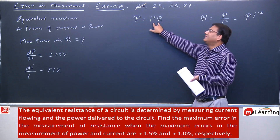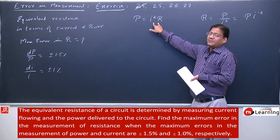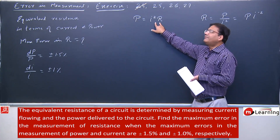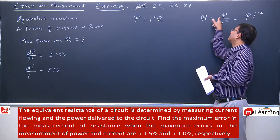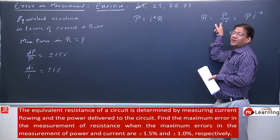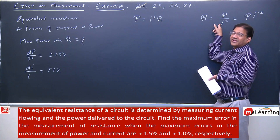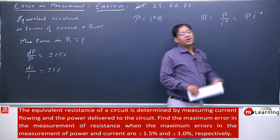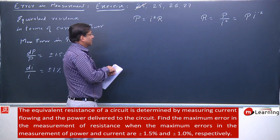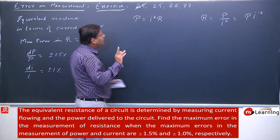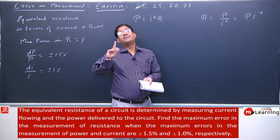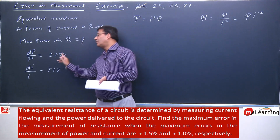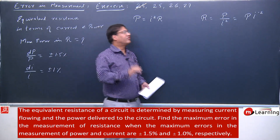Power is I²R. Power, current, and resistance are related this way. Resistance is power dissipated in the circuit upon the square of current flowing in the circuit. This is the equivalent resistance: R = P / I², or power times I to the power minus 2. We need to find the maximum error in determination of R, given maximum errors in power and current.